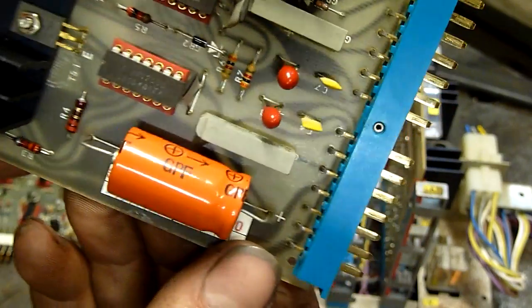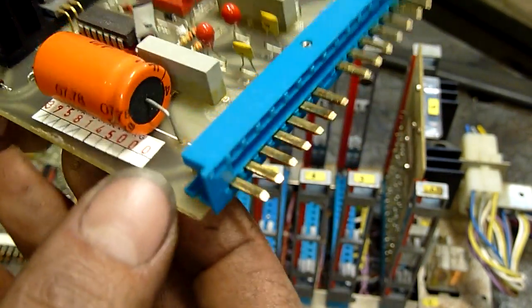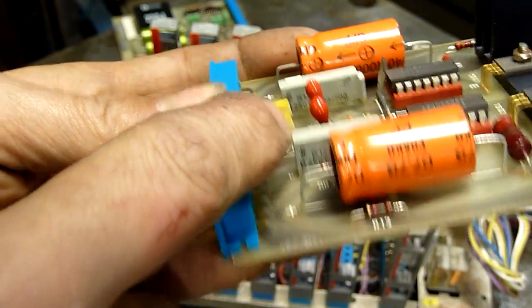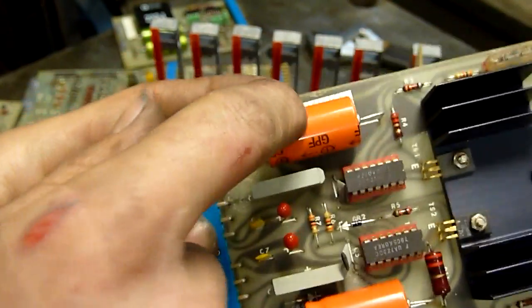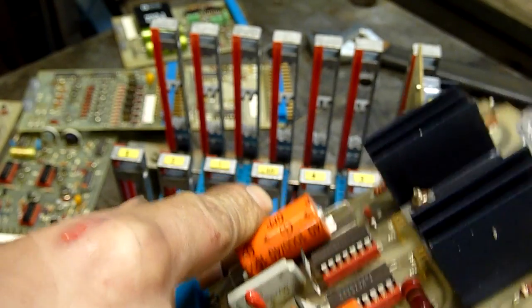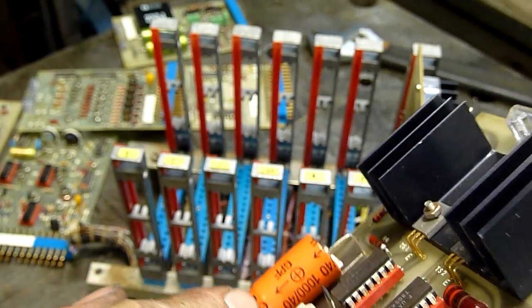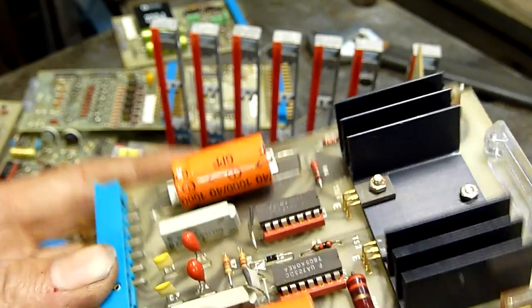And again... More miscellaneous crap. There are two small bridge rectifiers. DC capacitors, which are 1000 microfarad 40 volt. Axial capacitors.